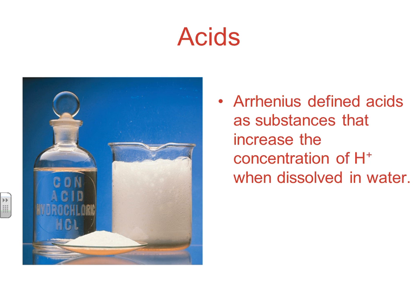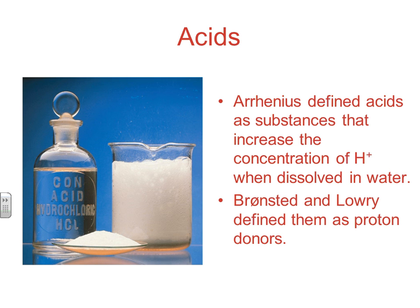Arrhenius defined acids as substances that increase the concentration of H+ when dissolved in water — if it had ionizable hydrogen, it was an acid. Bronsted and Lowry defined acids as proton donors. An H+ is really just a proton, because a hydrogen atom has one proton and one electron; when you lose your electron, you get an H+. When talking about hydrogen atoms in acids, you're really looking at H+ stuck to an anion. So when we track acids and bases with the Bronsted-Lowry definition, things that give a proton are acids, and things that receive the proton are Bronsted-Lowry bases.